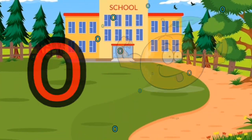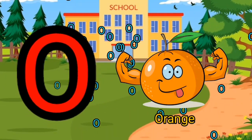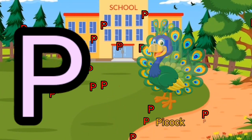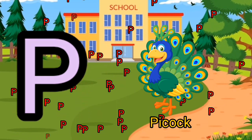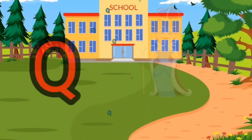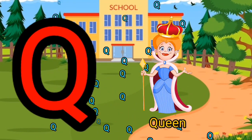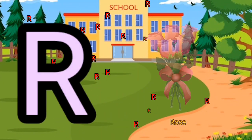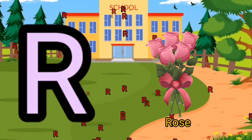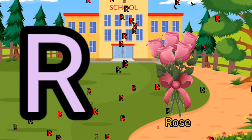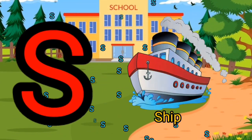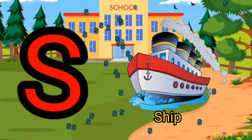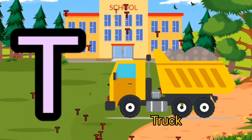O for orange, P for peacock, Q for queen, R for rose, S for ship.